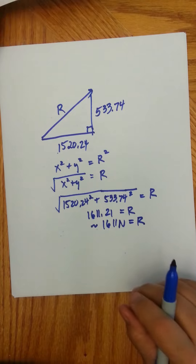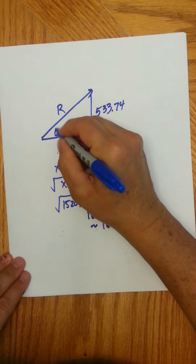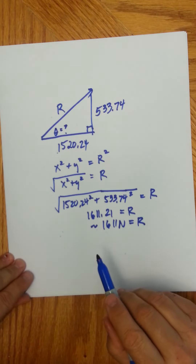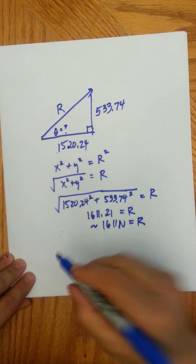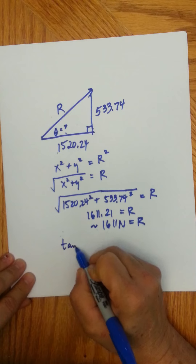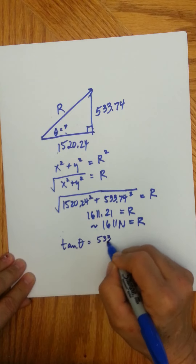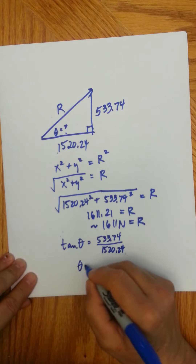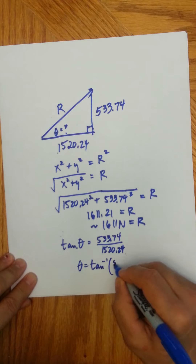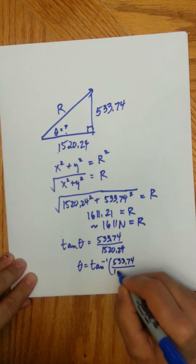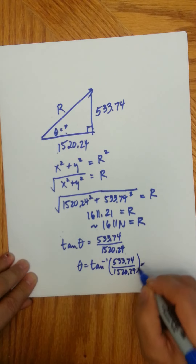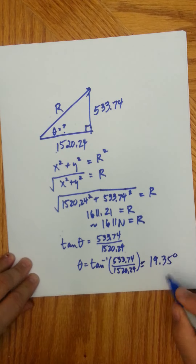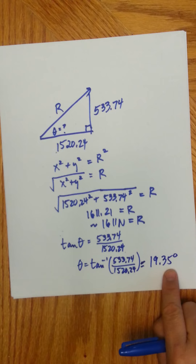We also want to know the angle that the resultant makes with the horizontal. We can use tangent — opposite over adjacent, or y over x. So tangent of theta equals 533.74 divided by 1520.24, and theta is the inverse tangent of that. When you put that in your calculator, you get theta equals 19.35 degrees with the horizontal.